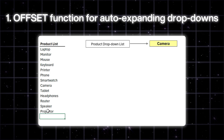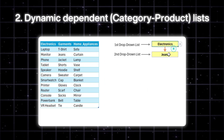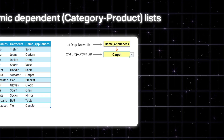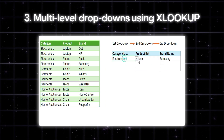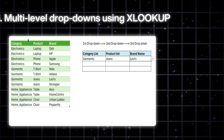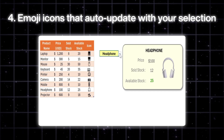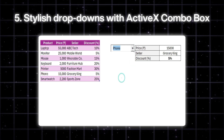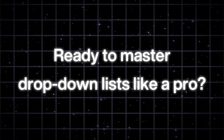One: OFFSET function for auto-expanding drop-downs. Two: dynamic-dependent category product lists. Three: multi-level drop-downs using XLOOKUP. Four: emoji icons that auto-update with your selection. Five: stylish drop-downs with ActiveX ComboBox. Ready to master drop-down lists like a pro? Let's dive in.